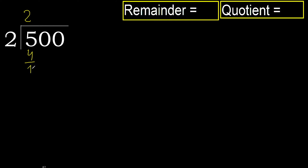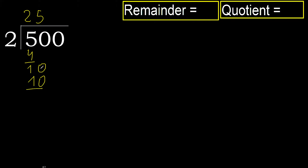Subtract. Next: 10. 2 multiplied by 6 is greater. Multiply by 5 — 10 is not greater. Subtract. 0.